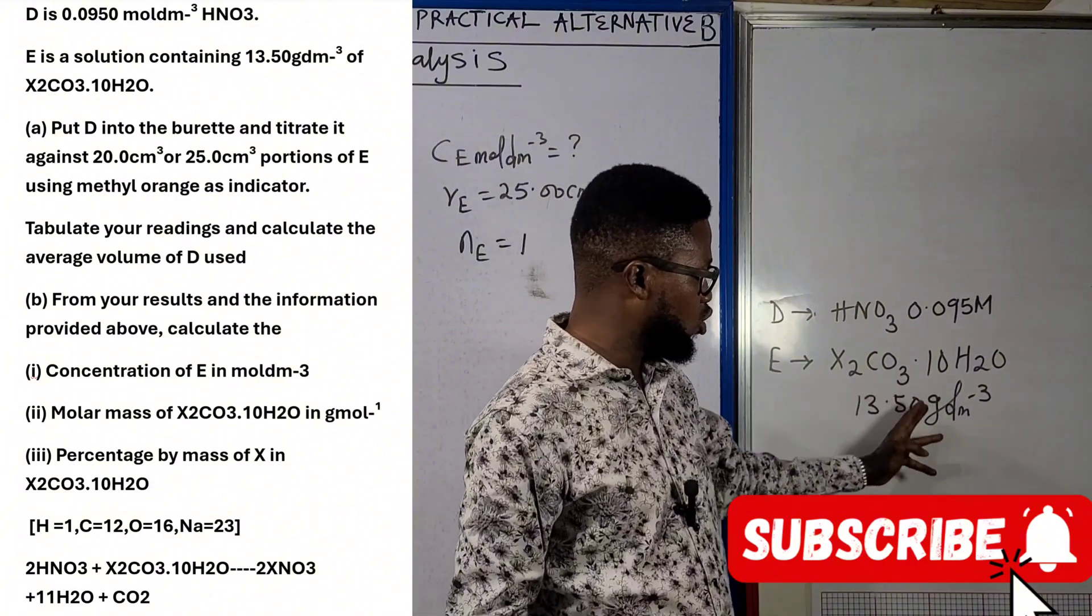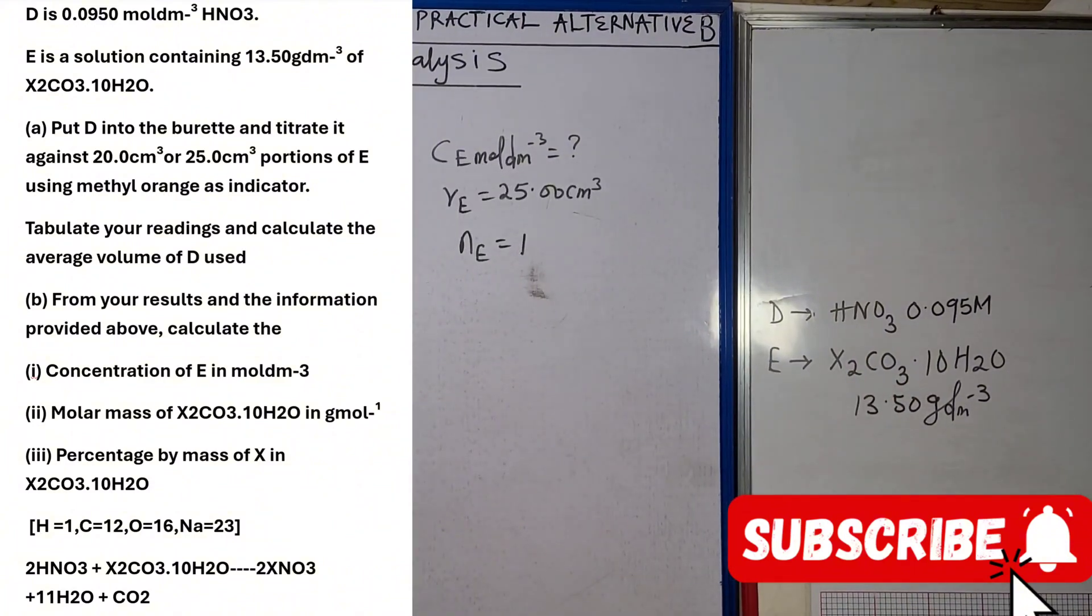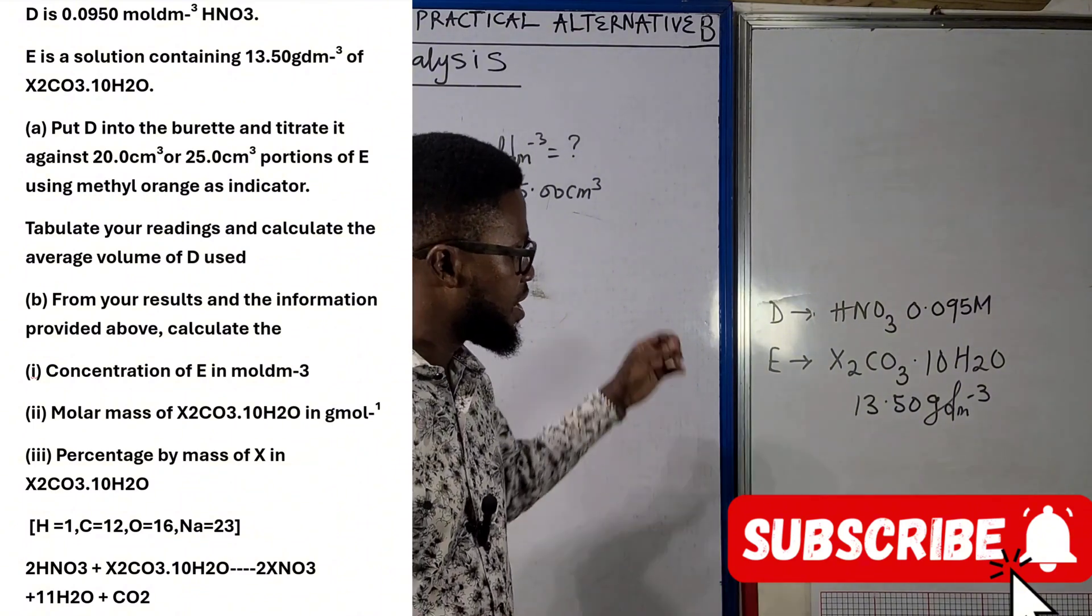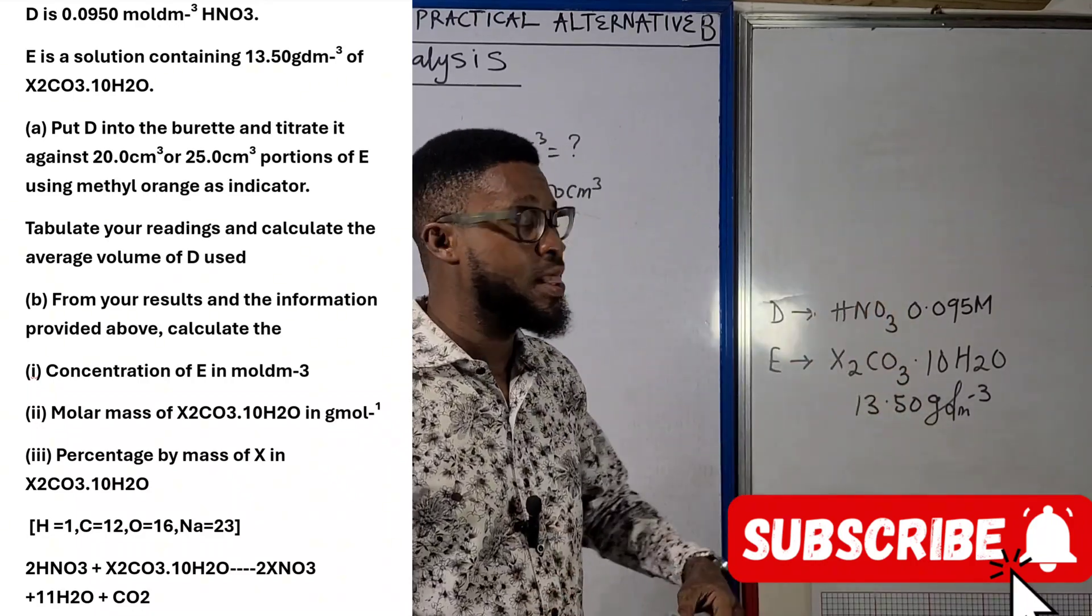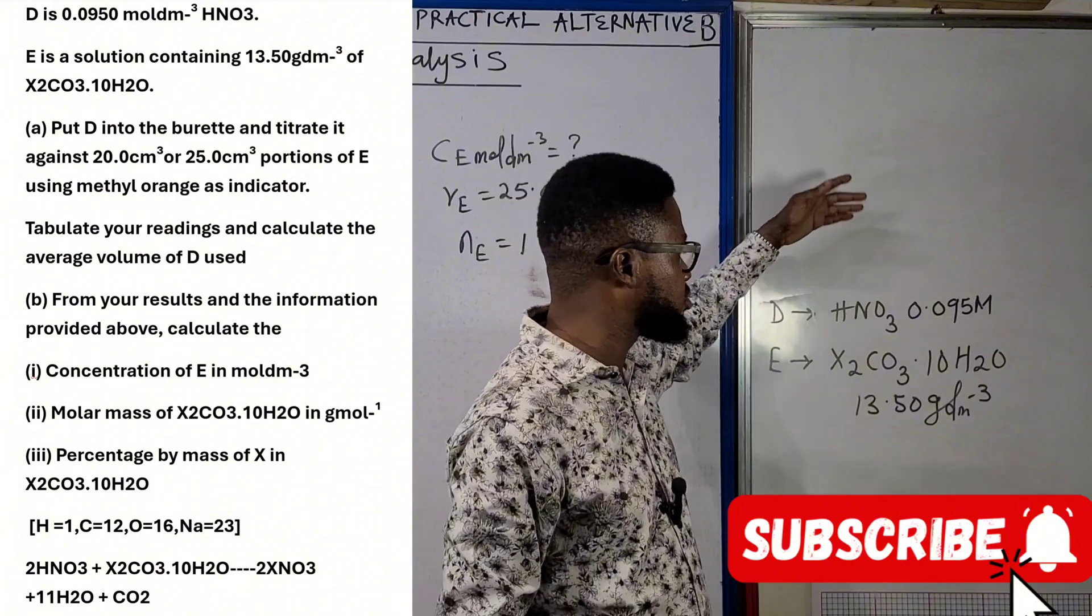You can see now we are not talking about NaOH, we are rather talking about Na₂CO₃. In this case we are taught to put D into the burette and titrate it against 20 or 25 cm³ portions of E using methyl orange as indicator.